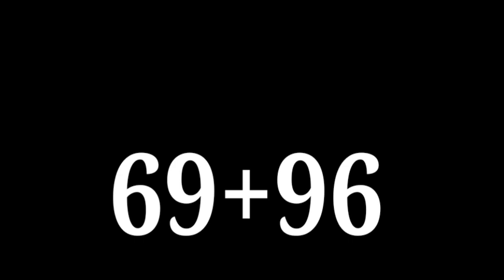The first step is to reverse the digits of the number. We are going to reverse the number 69. The reverse of 69 is 96. Then we add these two numbers.